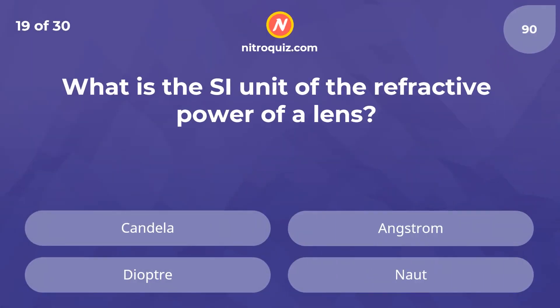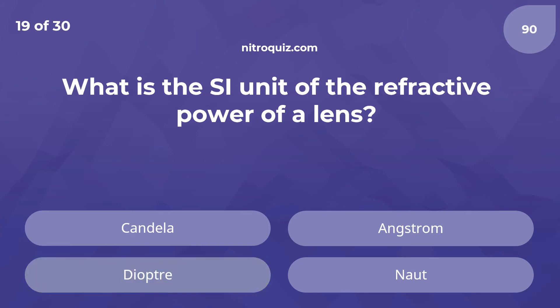What is the SI unit of the refractive power of a lens? The answer is diopter.